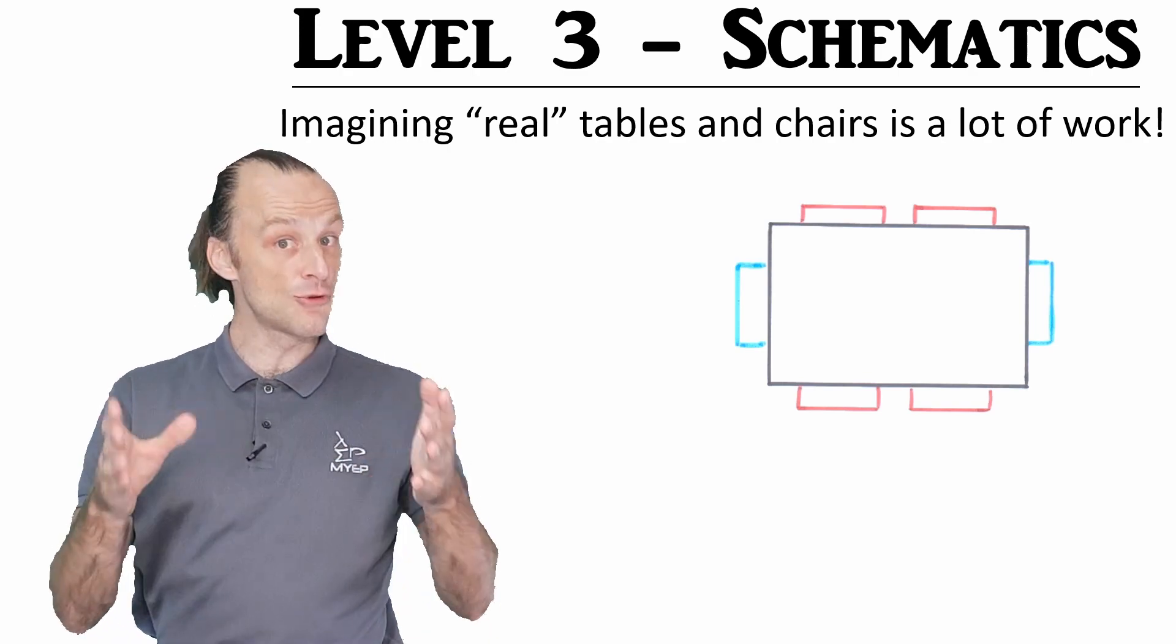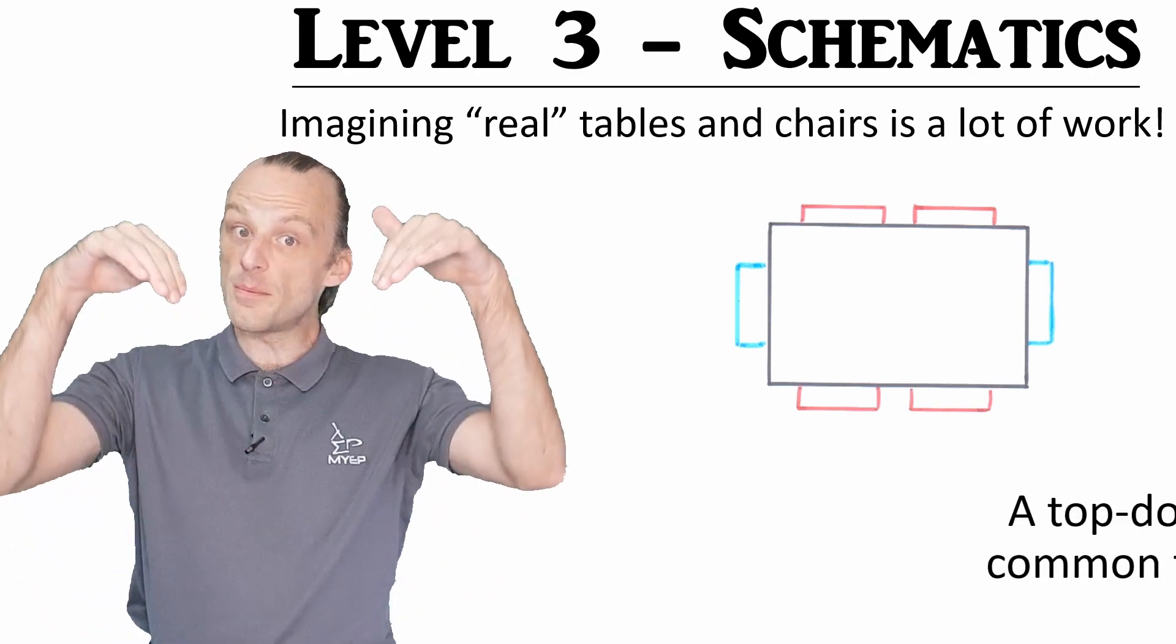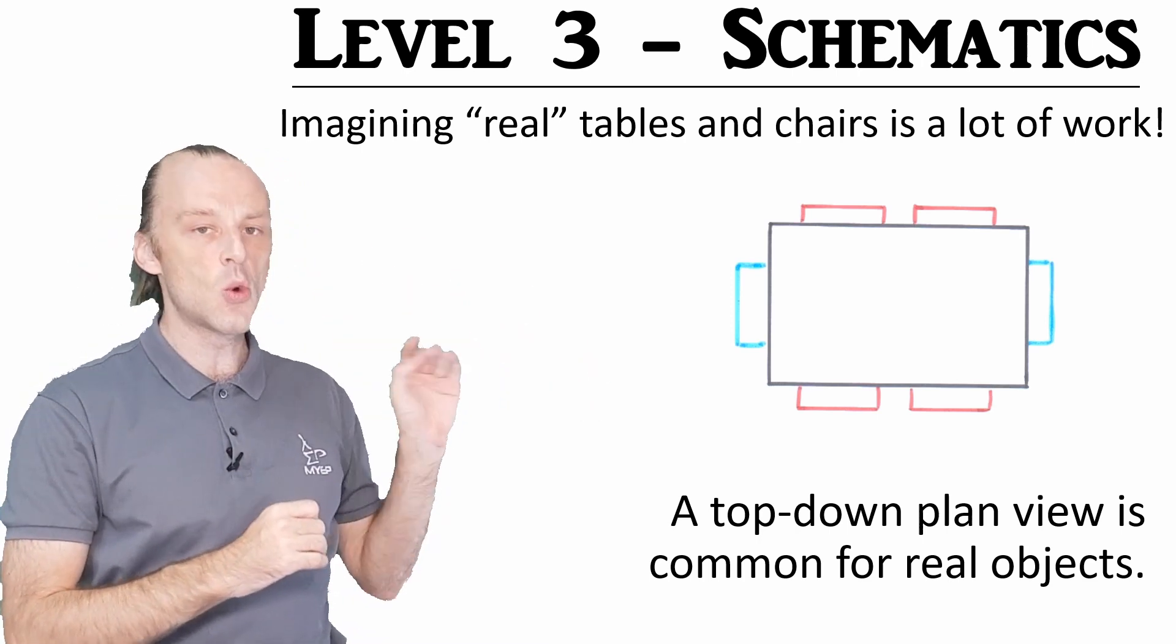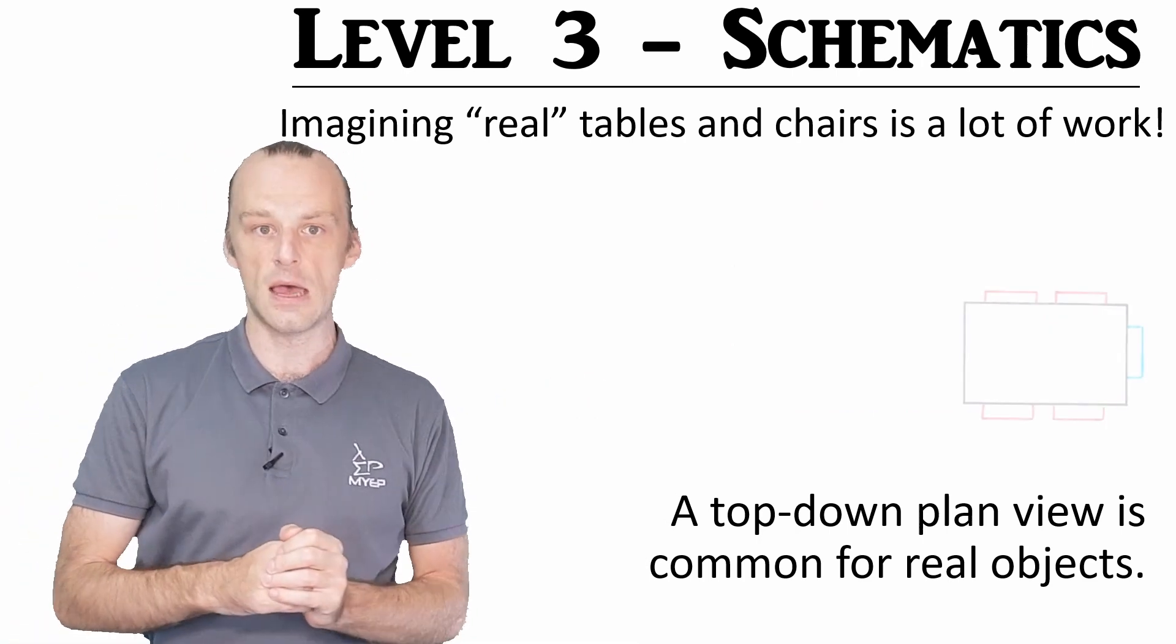Often for real objects, this is a top-down plan view. Like here, we can easily see the table and all six chairs at one time.